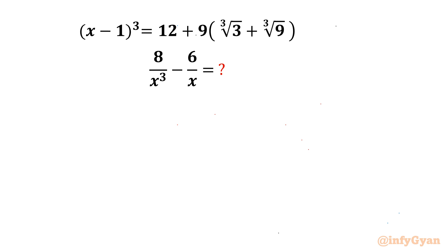Welcome back to Infigyan friends. In today's video we are having another challenging and interesting question from Radical Mathematics. Here we are going to evaluate 8 over x cubed minus 6 over x. The given equation is x minus 1 whole cube equal to 12 plus 9 times cube root 3 plus cube root 9. Let's get started by considering this expression equal to E first.